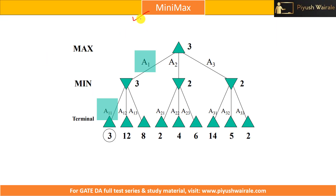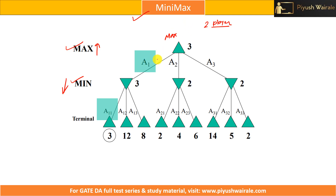We discussed this example in the last tutorial. Based on minimax algorithm, we solved this particular example. There are two players — max player and min player. Max player will always try to maximize its chances of winning, and min player will always try to minimize the score of max player. This is a two-player game. Max can take three possible actions: A1, A2, A3 at this particular state.